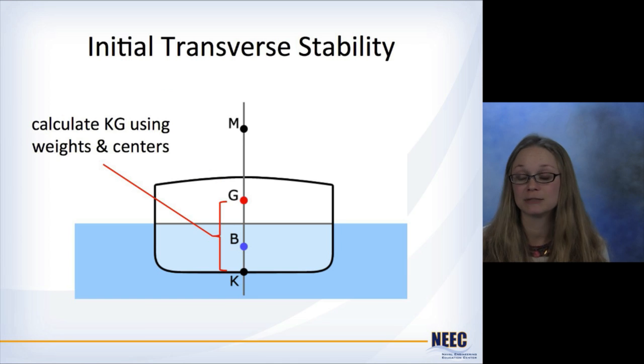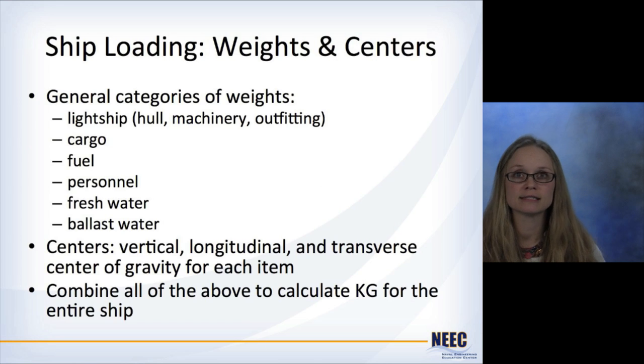KG we're going to calculate specifically using this weights and centers method. For the ship loading itself, we've got some general categories of weights: the lightship weight, which is the hull, machinery, outfitting - all the stuff that doesn't leave the ship ever. The cargo, fuel, personnel, fresh water, ballast water, etc. For the centers themselves, we have vertical, longitudinal, and transverse centers of gravity for each item. And then you combine all of the above to calculate the KG for the entire ship.